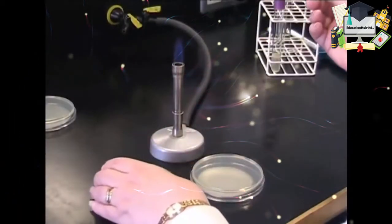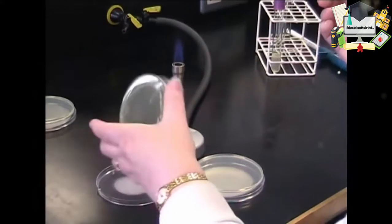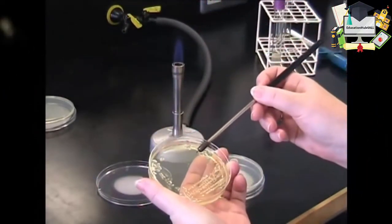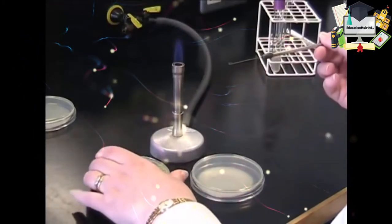Using your flamed and cooled loop, take a plate and remove an isolated colony. Place the lid.